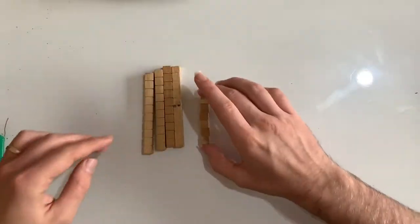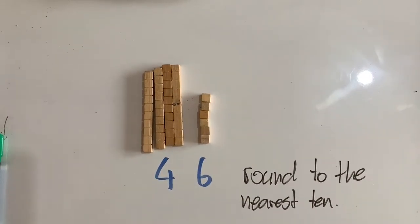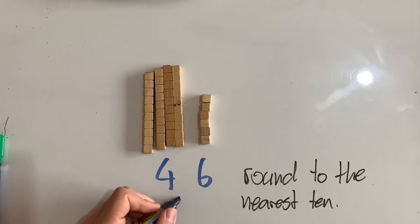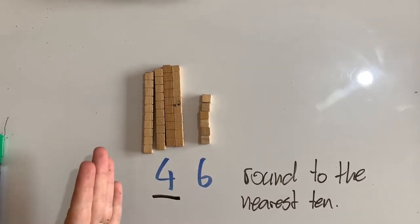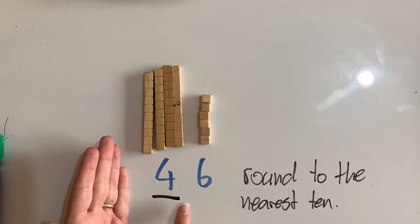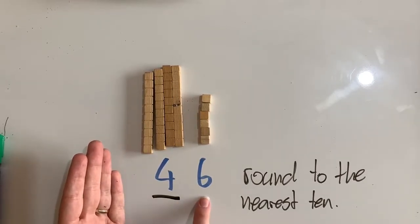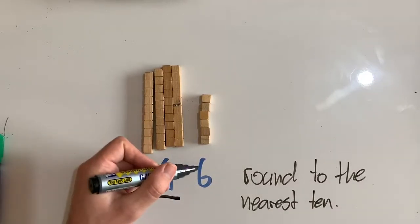Let's have a look at an example. I have the number 46 and I'd like to round it to the nearest 10. So I'm going to underline my tens column — that's the one we need to decide if it's going to change or not. To find this out, we look at the digit to the column to the right, just one to the right.